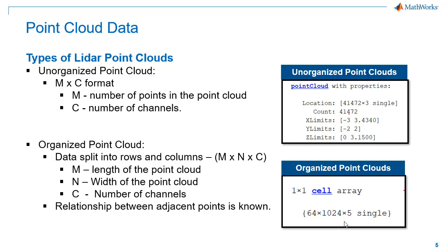Adjacent points in an organized point cloud are related to each other due to proximity in physical space between them. If we project an unorganized point cloud onto a sphere, we will get an organized point cloud. This conversion will be very useful in implementing certain LiDAR processing algorithms.